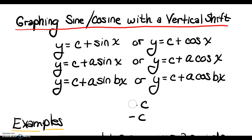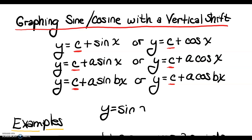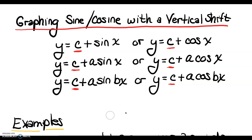The same is true with our trigonometric functions, except we tend to put the value that we're adding or subtracting in front as the first term instead of the last term. That helps avoid any ambiguity as to whether we're taking the sine of x or the sine of x plus c. So we usually put it in front so there's no ambiguity.